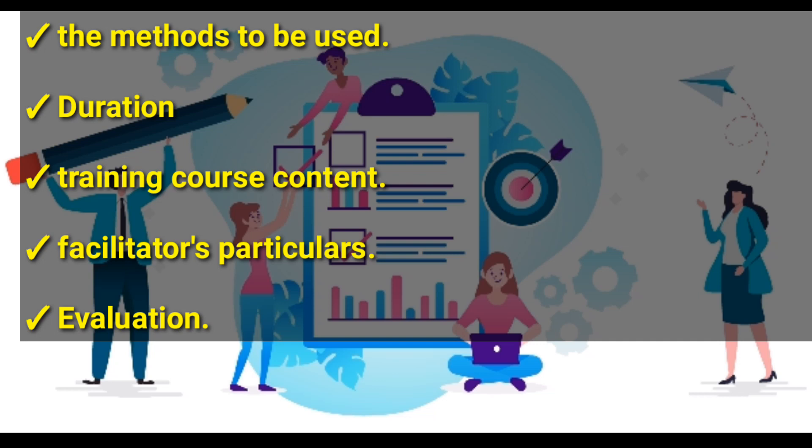Those are the eight features of a training program: evaluation, facilitators' particulars, training course content, duration, methods to be used, training objectives, title of the training, and the name of the organization where the training is going to be carried out.